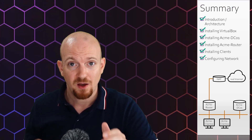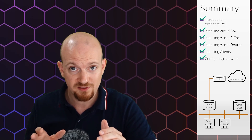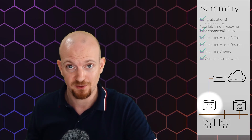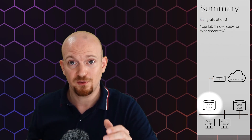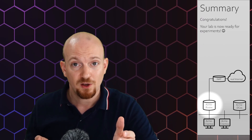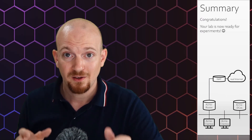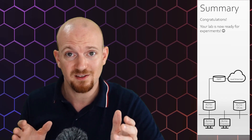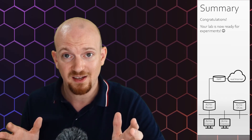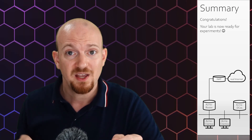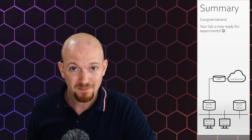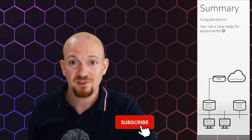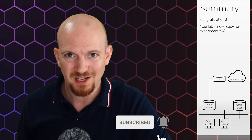You now have a working lab environment with a configured network. All systems connect through one system to the internet through the router we have configured. This way, it's possible in future videos to do lab experiments without interference to your home network. Starting with the next video, we're going to showcase and experiment on various IT topics which are typically performed in a Windows environment. If you don't want to miss out on any topic, I suggest that you subscribe to this channel and ring the bell. Stay tuned — see you next time.